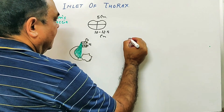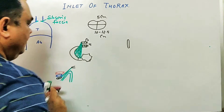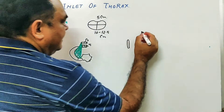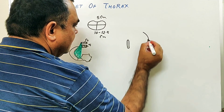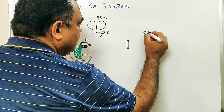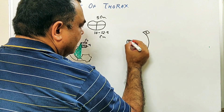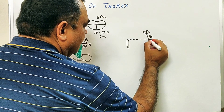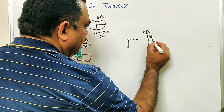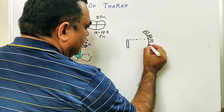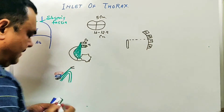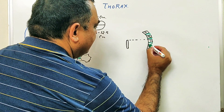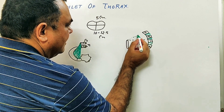If you see the diagram, here is the position of the manubrium sternum. If you cut this in median section, here is the position of T1 vertebra, here is T2 vertebra, and here lies T3, and here is T4 vertebra. Here is the intervertebral disc. This is the plane of the inlet.